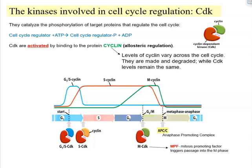Cyclins bind allosterically to CDKs and activate them. The amount of CDKs typically stays the same across the cell cycle, but cyclin levels vary because cyclins are synthesized and then degraded repeatedly. There are particular cyclins for particular phases: G1/S cyclins, S cyclins, and M cyclins. The G1/S cyclin activates its CDK at G1 phase, then is degraded as S cyclins accumulate. S cyclin activates CDK, which phosphorylates target proteins to initiate DNA replication.